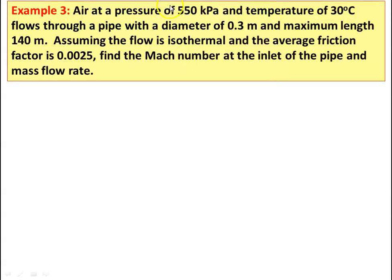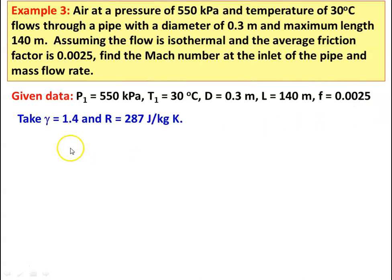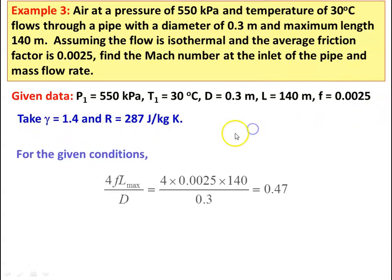Example number 3: air at a pressure of 550 kilo Pascal and temperature of 30 degree Celsius flows through a pipe with a diameter of 0.3 meter and an actual length of 140 meter. Assuming isothermal flow and average friction factor of 0.0025, find the Mach number at the inlet and the mass flow rate. Given: P1 = 550 kPa, T1 = 30°C, diameter = 0.3 m, length = 140 m, F = 0.0025, L_max = 140 m. 4FL_max/D = 4 × 0.0025 × 140 / 0.3 = 0.40.